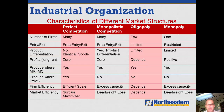Since monopolistic competitors and monopolies have downward sloping demand curves, they wind up with price exceeding marginal revenue, and so price exceeding marginal cost. This means that monopolistic competitors and monopolists produce an inefficient quantity of output and produce above the bottom of their average cost curve.